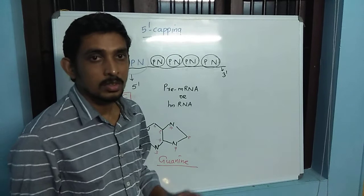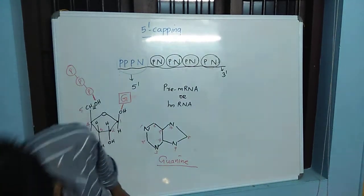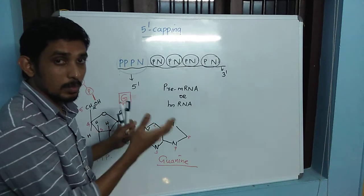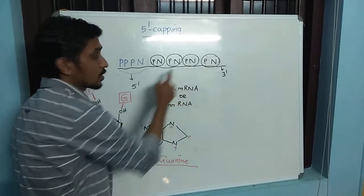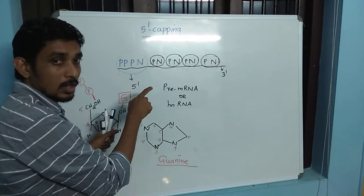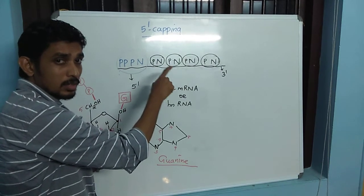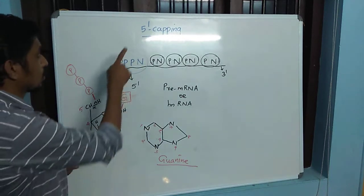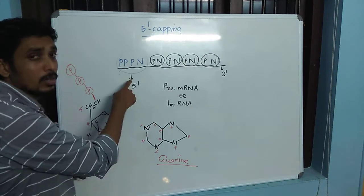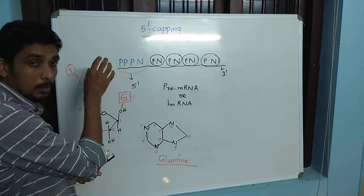Here I am going to discuss mainly about the five prime capping process. This is the structure of premature mRNA, which is made up of nucleotide monophosphates, whereas the first nucleotide present at the five prime end of mRNA is existing in the form of a triphosphate nucleotide, whereas all other nucleotides inside the mRNA exist in the form of nucleotide monophosphate. Five prime capping means adding a modified guanosine nucleotide called seven-methyl guanosine at the five prime end of messenger RNA.